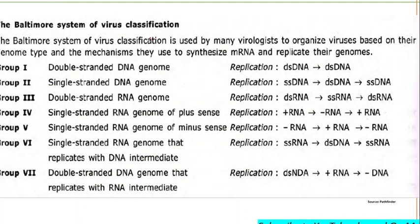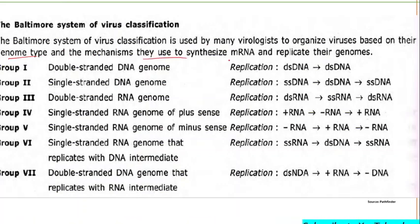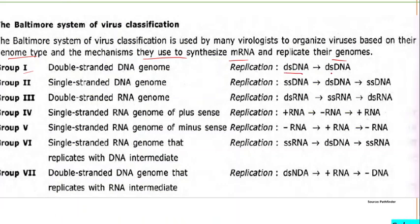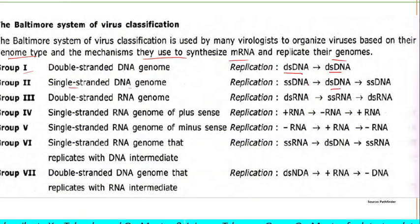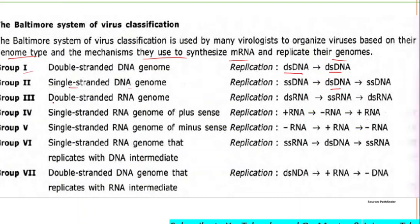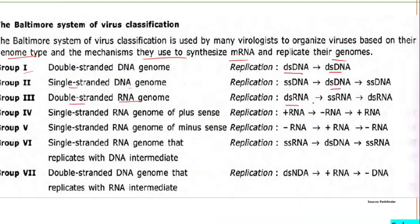The Baltimore classification system classifies viruses based on genome type and the mechanism used to synthesize mRNA and replicate their genome. Group 1 includes double-stranded DNA genomes synthesized from double-stranded DNA. Group 2 includes single-stranded DNA genomes where double-stranded DNA is first formed, then replicated back to single-stranded DNA. Group 3 includes double-stranded RNA genomes where double-stranded RNA forms single-stranded RNA, which converts back to double-stranded RNA.